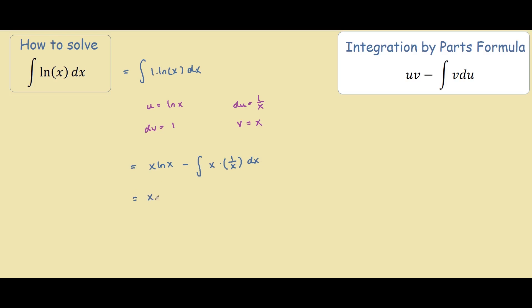So rewriting this out we have x ln of x minus the integral of x times 1 over x is 1, so integral of 1 dx.